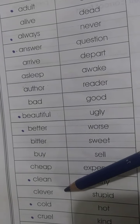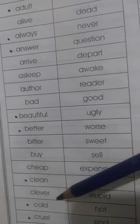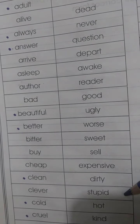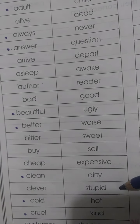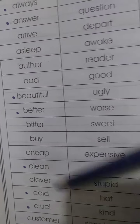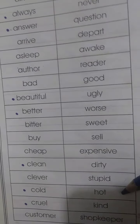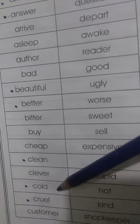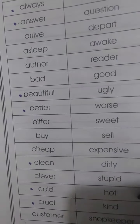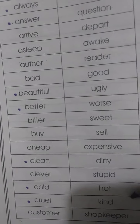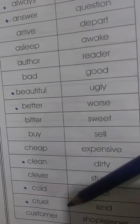'Clever' — chalag, meaning smart. Antonym is 'stupid' — jokey, jis ke paas akal na, meaning someone without wisdom. 'Cold' — thinda. Antonym is 'hot' — garam. 'Cruel' — yianni sast. Antonym is 'kind' — yianni daram mizaj, meaning soft-natured.